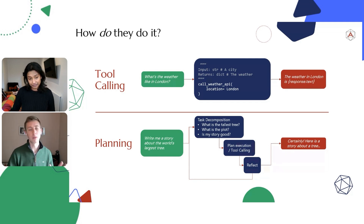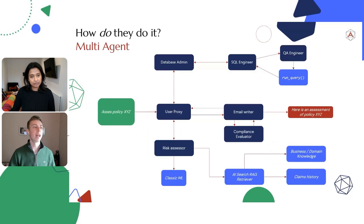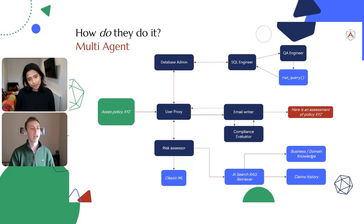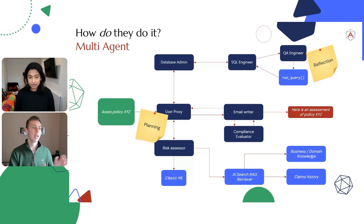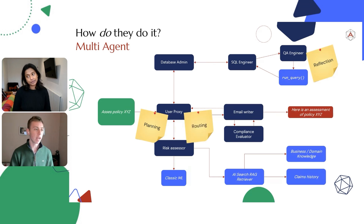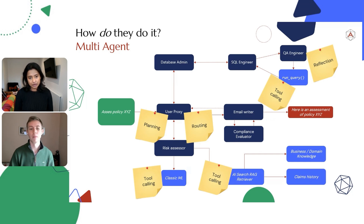When planning starts using tool calling and reflection, that's when we get more into the realm of multi-agent. Here's a high-level example of how you might have an agent assessing some sort of policy — perhaps in a legal or insurance context. You can see a sea of different agents doing various things: some reflection, generating SQL code, checking it with an agent that has a QA engineer persona, and some planning at the user proxy end. You've also got routing — given this stage of the plan, where do I route next? And a bunch of tool calling — running RAG searches, hitting endpoints of classical ML models, running SQL code against a database.